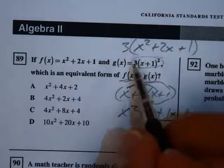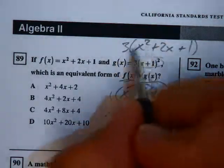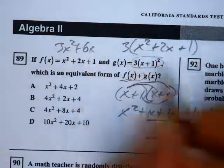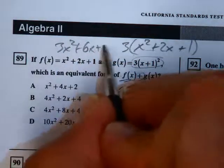Distribute the 3 and we're pretty close to being done. We've got a 3x squared. That's a plus 6x and that's plus 3.